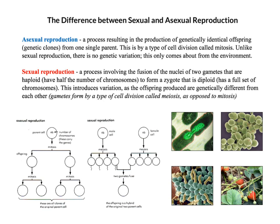I want to start by giving a definition for these two things - for asexual and sexual reproduction. I've put them already onto the screen, but I want to highlight just the key things in these definitions that really bring home this difference between the two types of reproduction. With asexual reproduction, the key things to know is that we're producing genetically identical offspring - they're clones, ultimately, of one another, and they derive from one single parent.